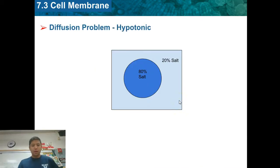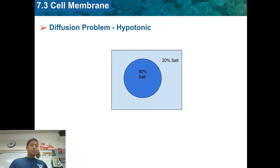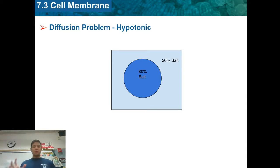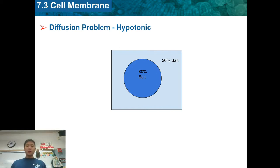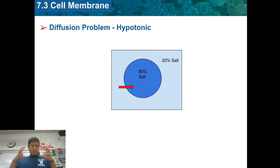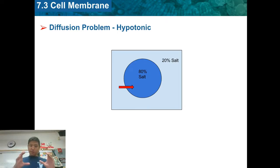Let's take a look at some problems. Remember, you have to pay attention to where there is more salt, because wherever there is more salt, that's where the water is going to go. We've got 80% salt in the cell and 20% salt outside the cell. Since there's more salt inside the cell, water is actually going to go into the cell. The cell is going to get big like an O, so this is called a hypotonic solution.